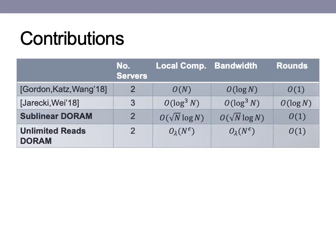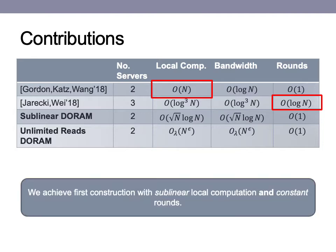We also wish to limit the amount of work the servers have to do to be sublinear in the data size, as this scales poorly for large datasets otherwise. In this limited table — see the paper for full comparison — we examine previous work that either managed constant rounds or sublinear local computation. Gordon, Katz, and Wang, for example, have constant rounds but linear server computation. Jarecki and Wang achieves the best overall parameters but does not obtain constant rounds in sublinear work. We are the first work to obtain sublinear local computation and constant rounds simultaneously.